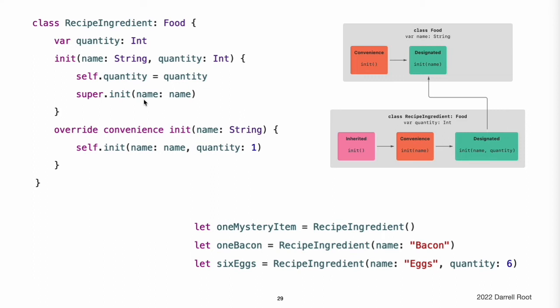RecipeIngredient also provides a convenience initializer, init(name:), which is used to create a RecipeIngredient instance by name alone. This convenience initializer assumes a quantity of one for any RecipeIngredient instance that is created without an explicit quantity. The definition of this convenience initializer makes RecipeIngredient instances easier and more convenient to create and avoids code duplication. This convenience initializer simply delegates across to the class's designated initializer, passing in a quantity value of one.